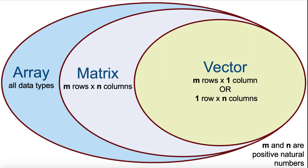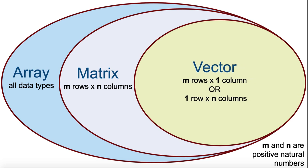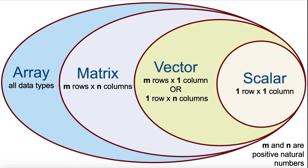Within that, a one-dimensional array of numbers with either one row or one column is called a vector. And within that, a one-by-one array or a singular number is also known as a scalar.